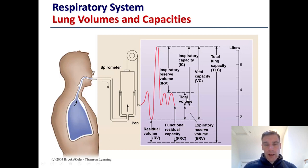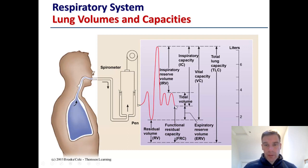As we breathe normally we have some air remaining within the lungs, so if I get to the bottom of a normal breath I can still blow further out. If we take from the bottom of a tidal volume to the maximum expiration, that represents our expiratory reserve volume. You'll be able to use your spirometry data to calculate your expiratory reserve volume.